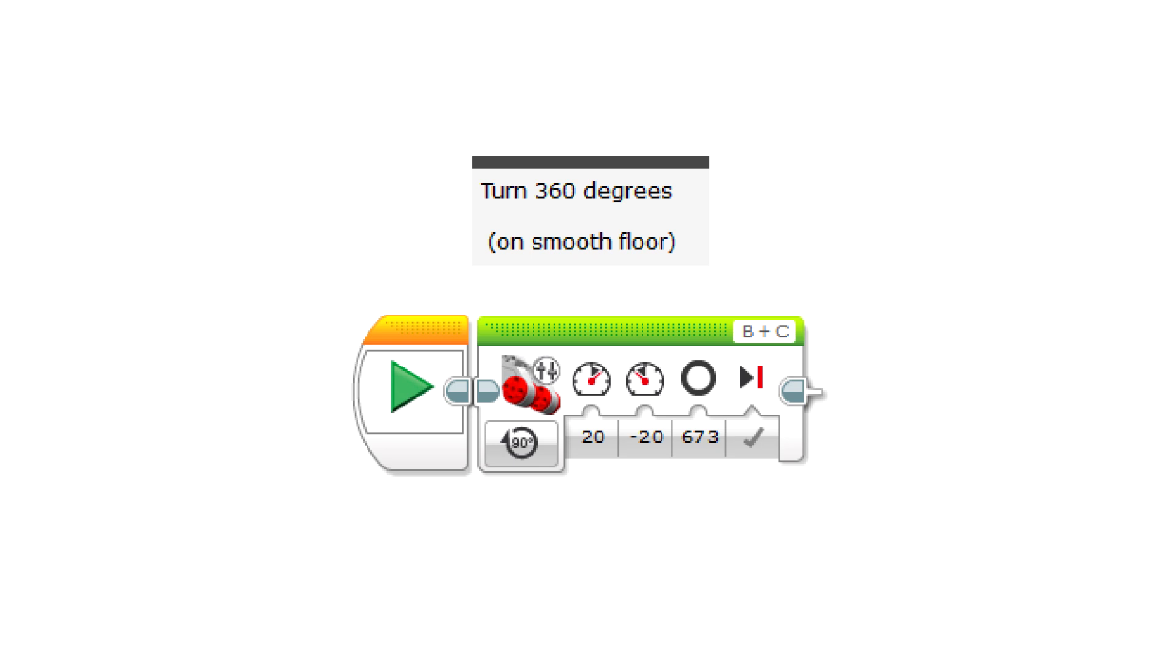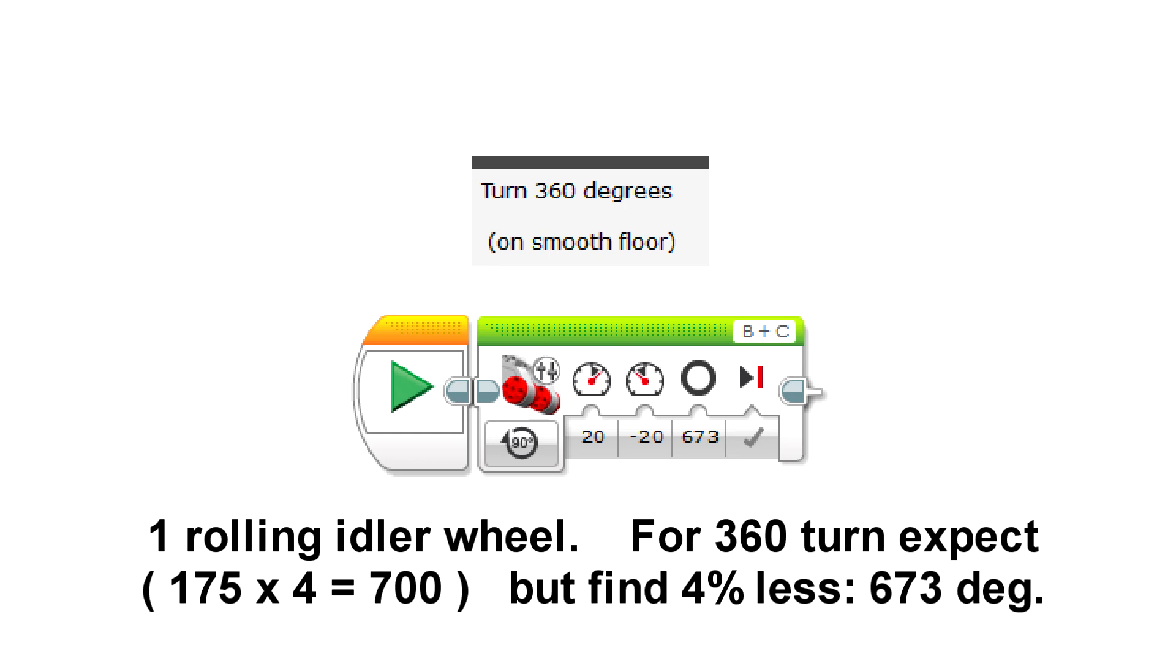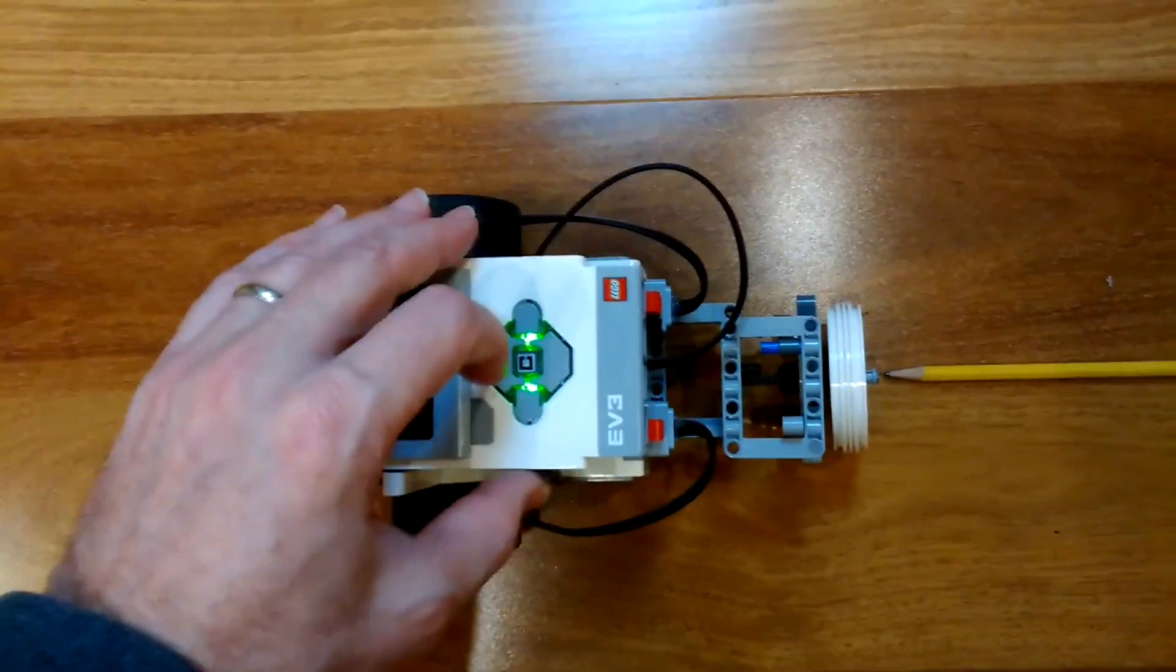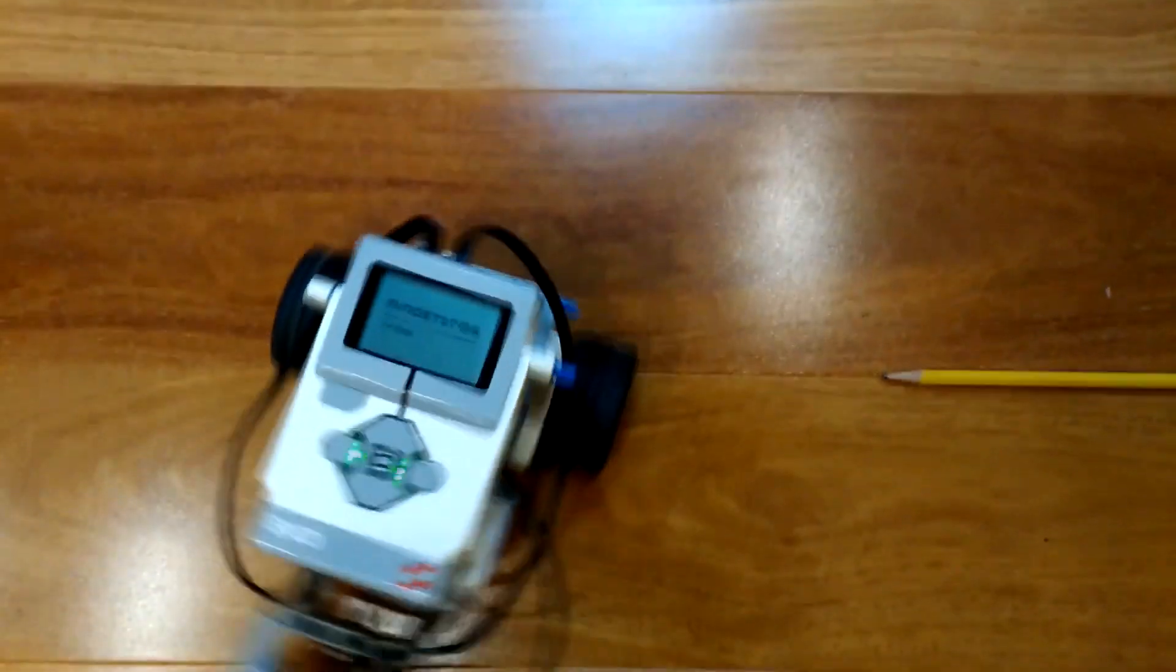If the 90 degree turn for the robot needed the wheels to turn 175 degrees, we should get a full 360 with a wheel motion of 175 times 4, or 700 degrees. When we try it out, it turns out that we need about 4% less, or 673 degrees. So, the sideways wheel drag had about a 4% effect, even on a smooth floor.